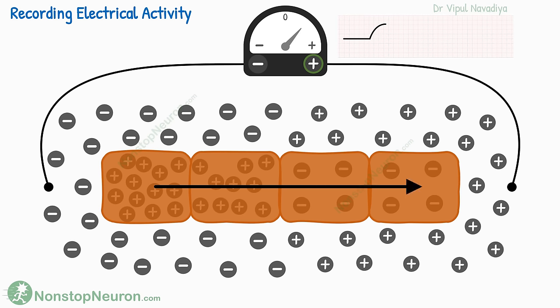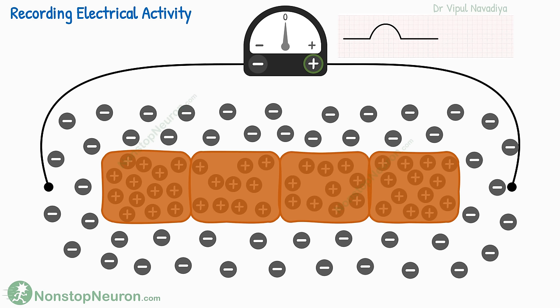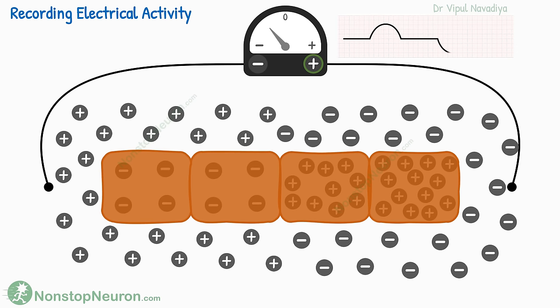The action potential travels in this direction, so these cells also depolarize by inrushing of positive ions into the cell, making the outside electronegative. At this point, both electrodes have the same negative potential — there is no potential difference — so the meter shows no reading and the graph returns to zero level. Then the cells start to repolarize. As these cells depolarized first, they also repolarize first. In repolarization, the positive ions come out of the cell and make the outside electropositive again. The other end is still depolarized with negativity outside, so this electrode is at electronegativity compared to the other one, and the meter shows a negative reading — recorded as a negative wave on the graph.